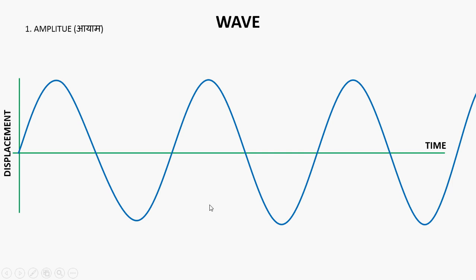So first of all we will see amplitude. Amplitude is the maximum displacement from the mean position, which is known as amplitude or 'A'. The minimum displacement is the same as amplitude in magnitude. The maximum positive displacement and the maximum negative displacement — both are called amplitude.